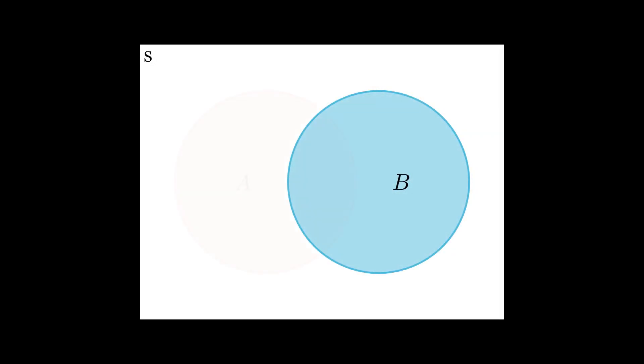Let's say we have a sample space S with two events A and B. The probability of A happening is P of A and the probability of B happening is P of B. We are interested in finding the probability of A happening given that B has already happened.